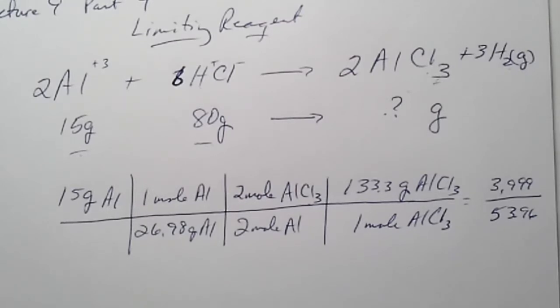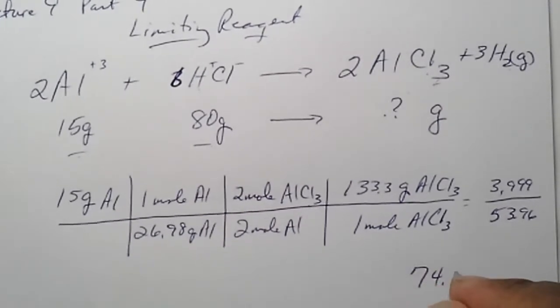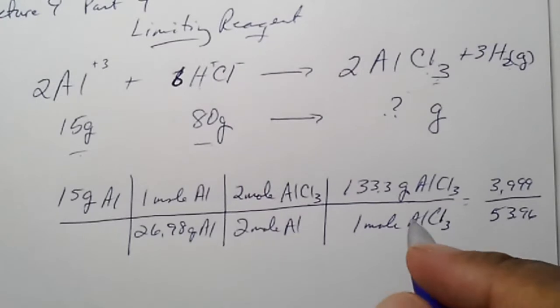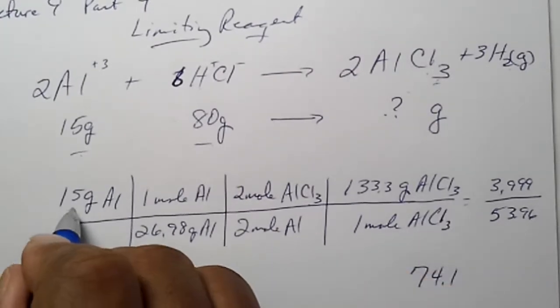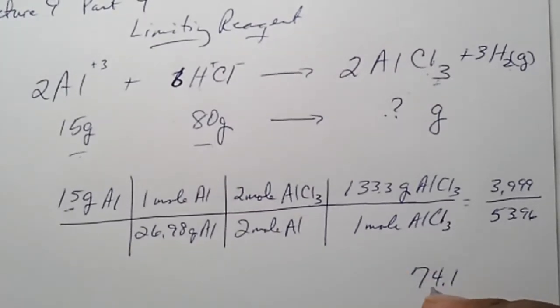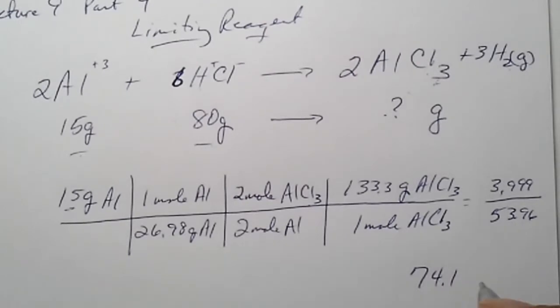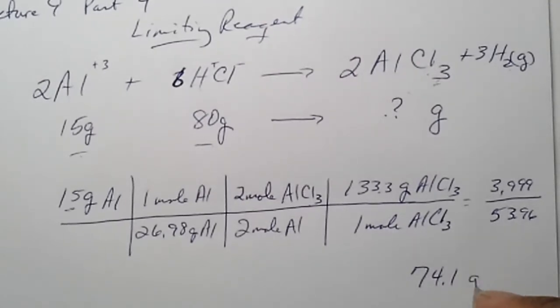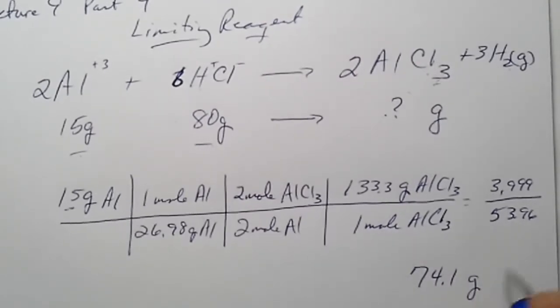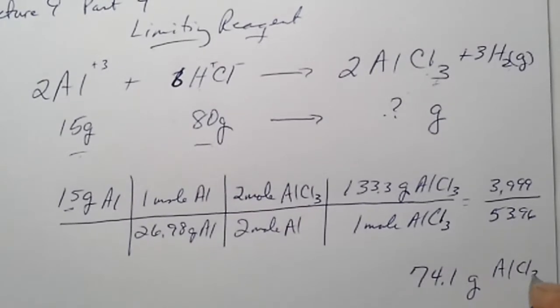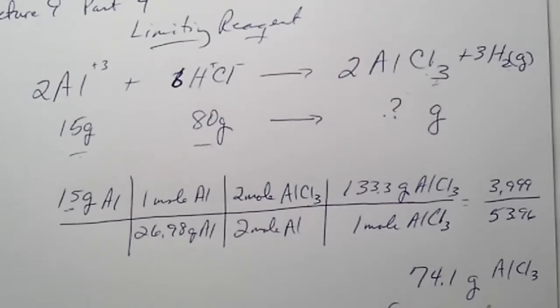And if we divide that three thousand nine-nine-nine by fifty-three point nine-six, we'll get seventy-four point one. And technically, two significant figures is all we need.